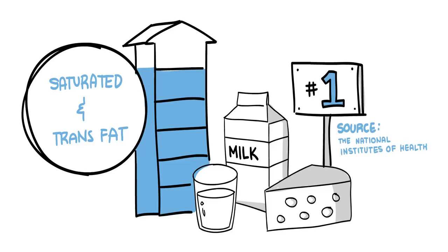All dairy contains saturated and trans fats, even skim in trace amounts. Cheese is the number one source of saturated fat in American diets. Pizza is number two, both according to the National Institutes of Health.